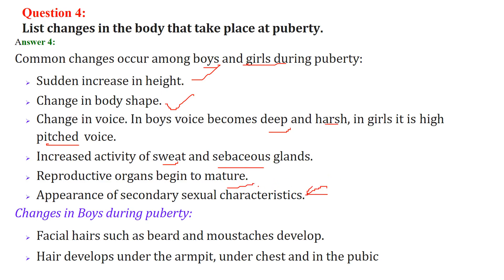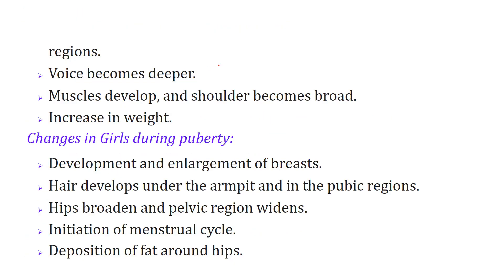Reproductive organs begin to mature and secondary sexual characteristics start appearing. Changes in boys during puberty: beard and moustache develop, facial hair develops, hair develops under the armpit, chest and pubic areas. Voice becomes deeper and louder, muscles develop, shoulders become broad, and there is an increase in weight.